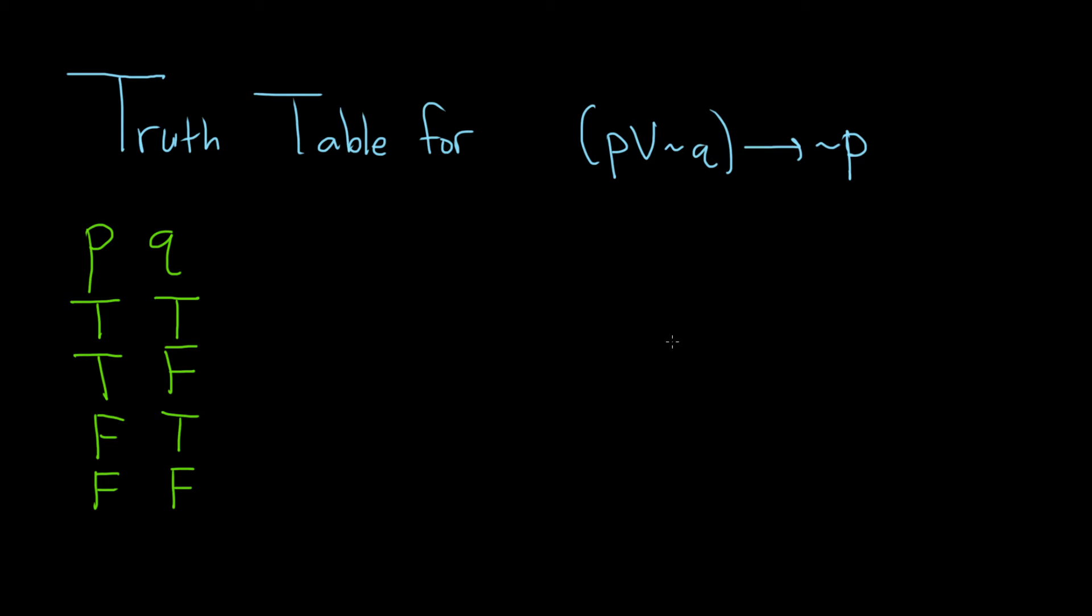Now we need to write the statements that work up to this one so that we can create this one from the ones we have written here. So maybe we can start by writing down not P. And it looks like we'll also need not Q. So let's write that down. And then now from these we can construct P or not Q. And then last but not least we have our final statement P or not Q implies not P.